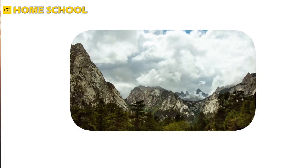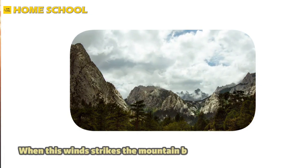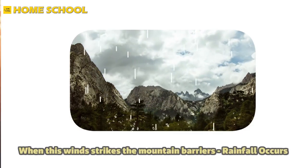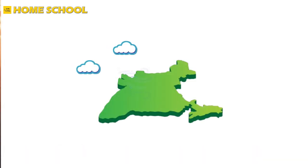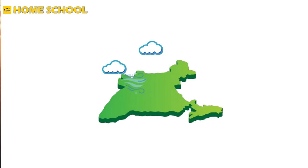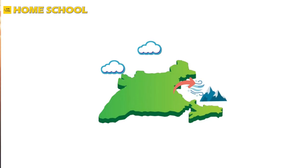When these winds strike the mountain barriers, rainfall occurs. A set of winds first moves towards the western edge of India and brings rain along those areas. It also goes all the way up to the eastern side of the country and then gets deflected by the Himalayas. As a result, the heavy clouds stop moving and start falling as rain on those particular areas.